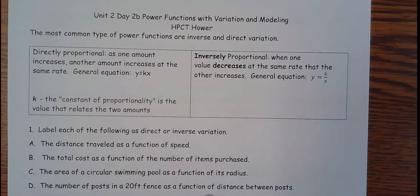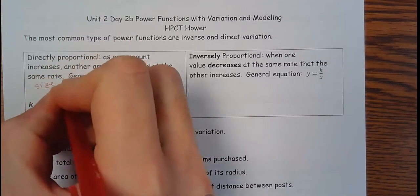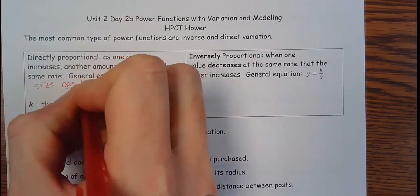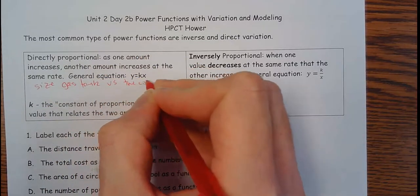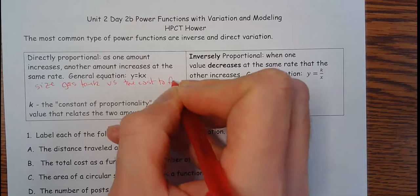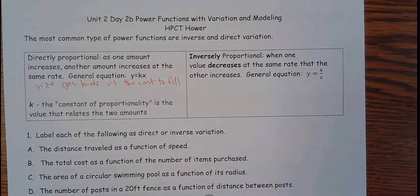Direct variation, if it's directly proportional, means as one amount increases, another amount would increase at the same rate. Some ideas of this would be the size of a gas tank versus the cost to fill it. The bigger it is, the more it's going to cost. And if it's twice the gas tank, twice the cost. It's going to be the exact same rate.